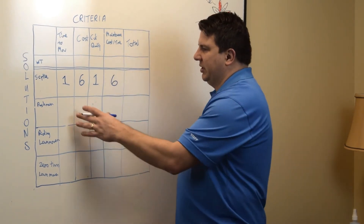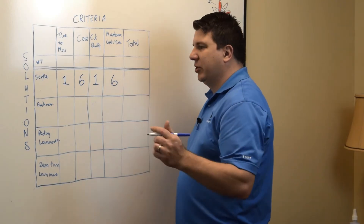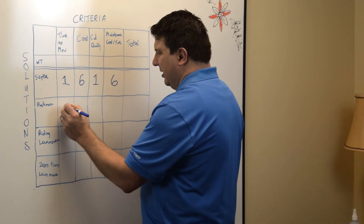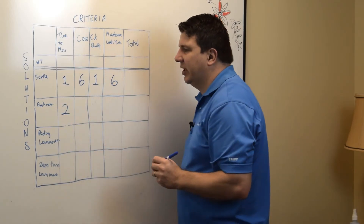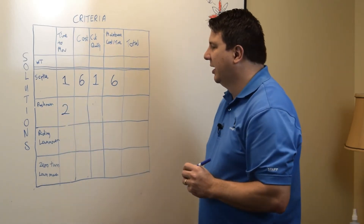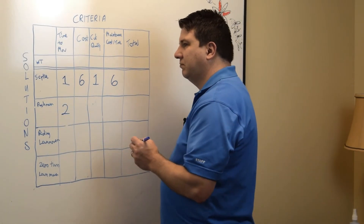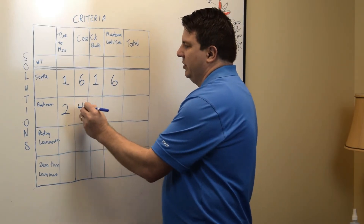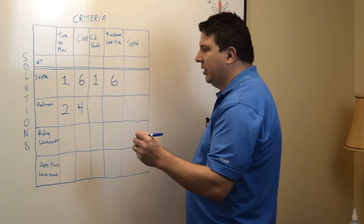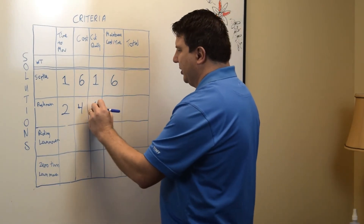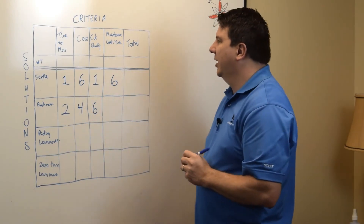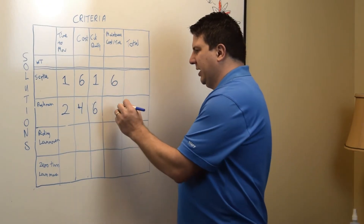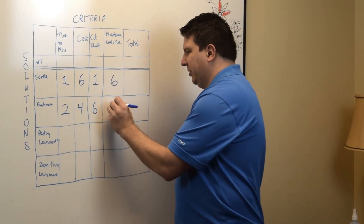Our next one is a push mower. A push mower is going to be faster, but not super fast — it's still probably going to be a two out of six for time to mow. Our cost I could see being a four, just above average. Cut quality is going to be pretty good — push mowers have good cut quality, so let's give that a five. Our maintenance cost and time — they don't take much to maintain them, so let's give that a five.